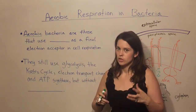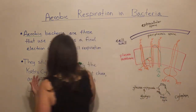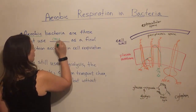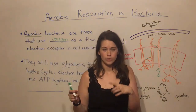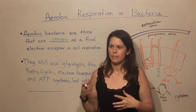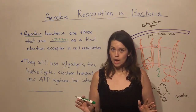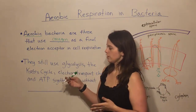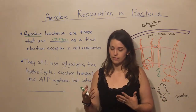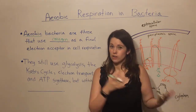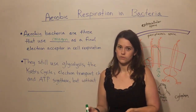The bacteria we are focusing on in this video are those known as aerobic. Aerobic bacteria are the bacteria that use oxygen as a final electron acceptor in cell respiration. In other words, these are the bacteria whose metabolisms are maybe a bit more like humans. They use oxygen as their final electron acceptor in cell respiration — that process of converting the energy stored in compounds like glucose into an easily available form called ATP.